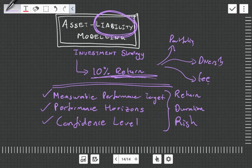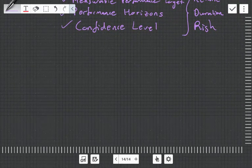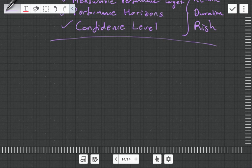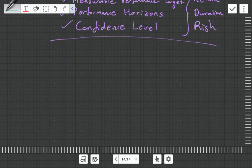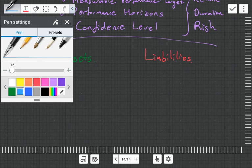The actuarial approach to investment strategy says, let's consider your assets and your liabilities. We want to look at your assets and your liabilities, and now we want to create a model.